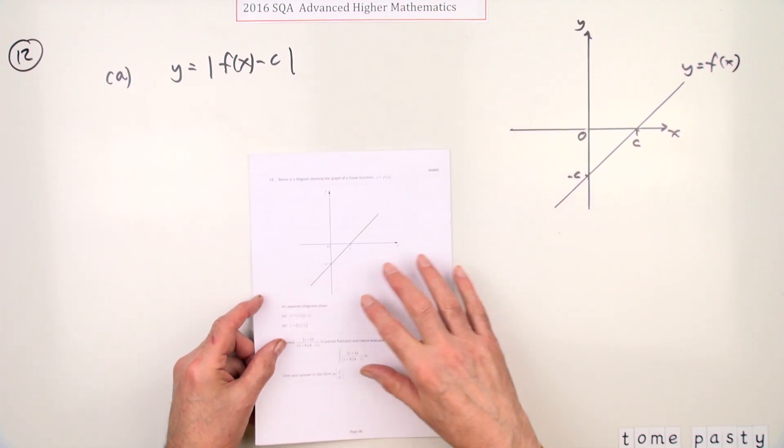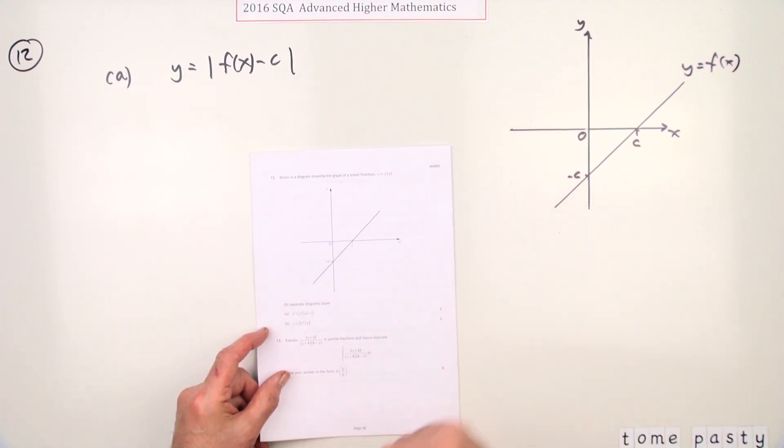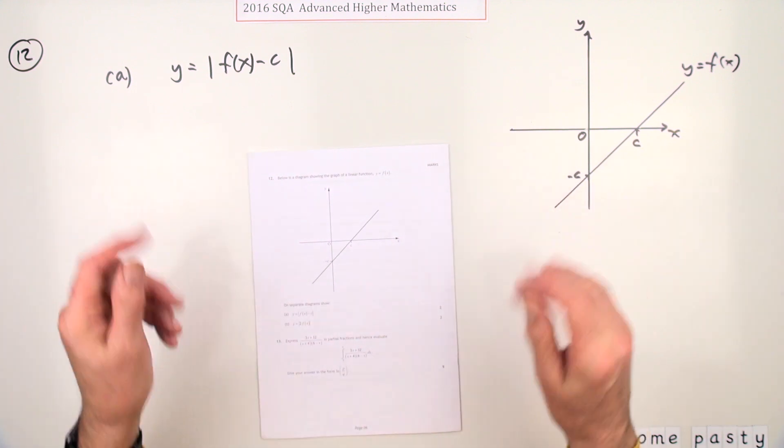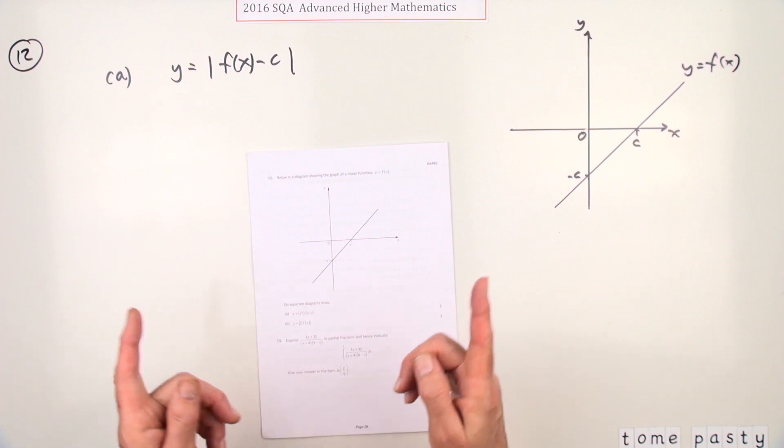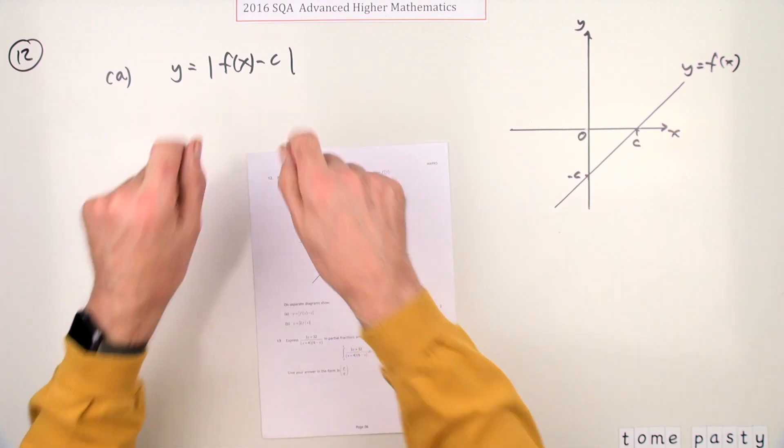So number 12 then, from the 2016 Advanced Higher Maths. Here we've got the graphs question of four marks, but again reduced just to transformations of a simple graph, with the sole addition of the modulus sign.